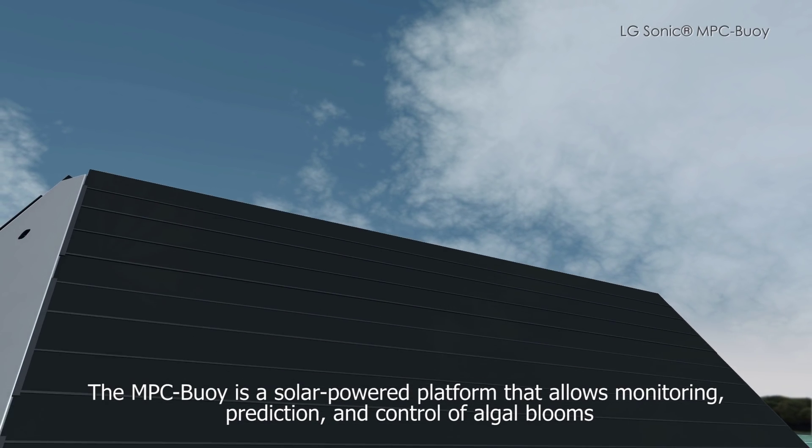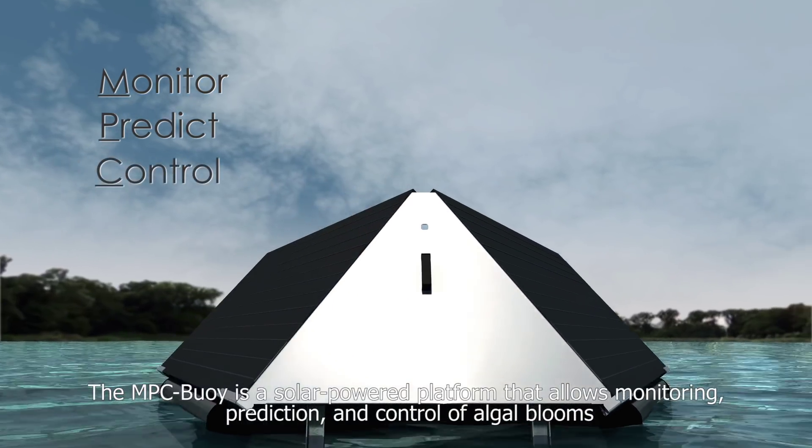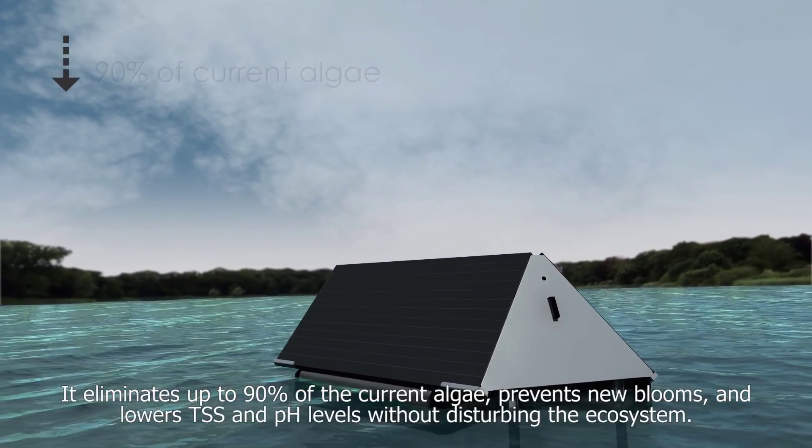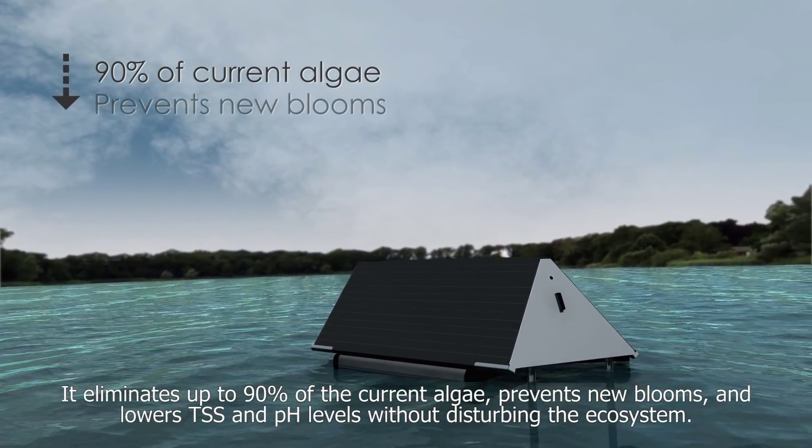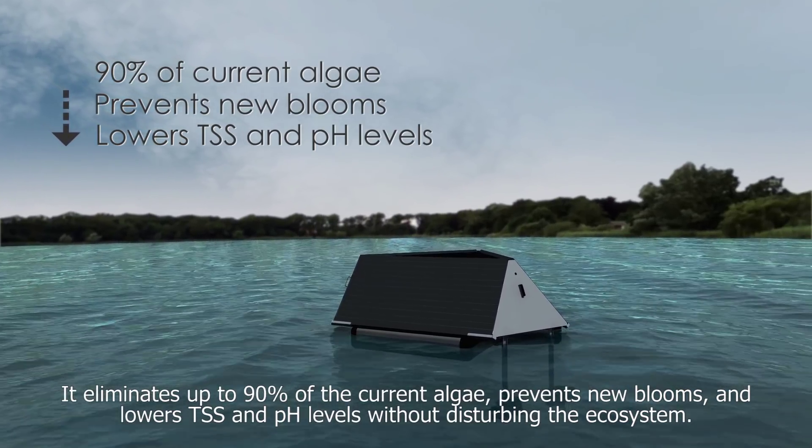The MPC buoy is a solar-powered platform that allows monitoring, prediction, and control of algal blooms with the use of ultrasound technology. It eliminates up to 90% of the current algae, prevents new blooms, and lowers TSS and pH levels without disturbing the ecosystem.